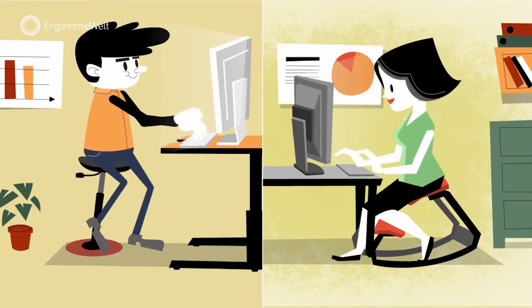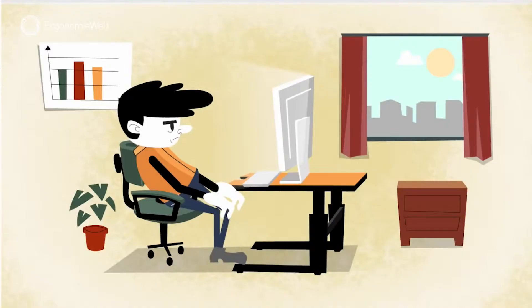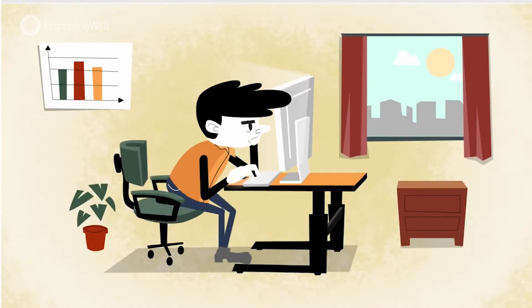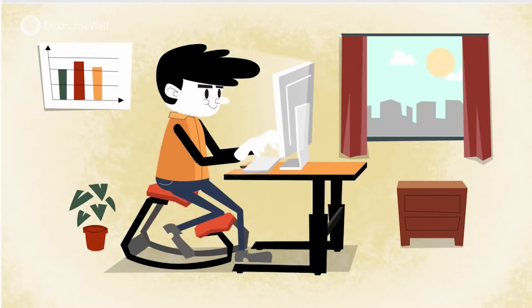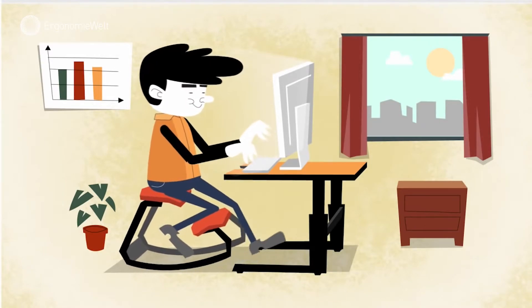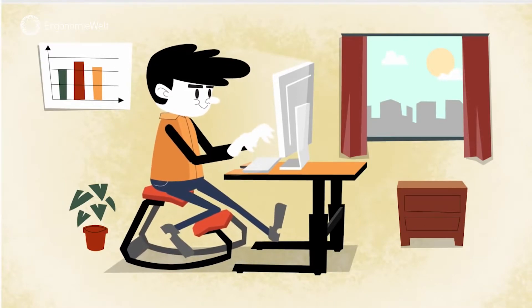It takes some getting used to, but so do all healthy lifestyle changes. Active sitting opens the angle between the upper and lower body. This new angle works your core, keeps your spine lubricated, burns calories, and increases oxygen levels.